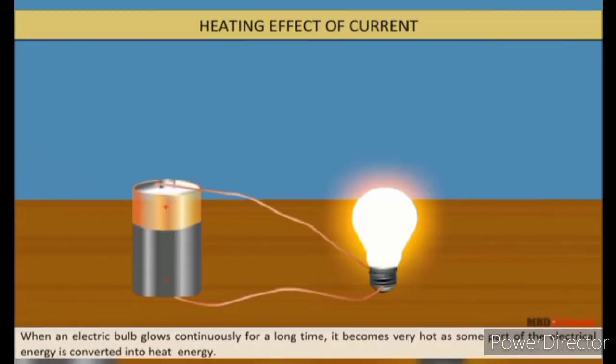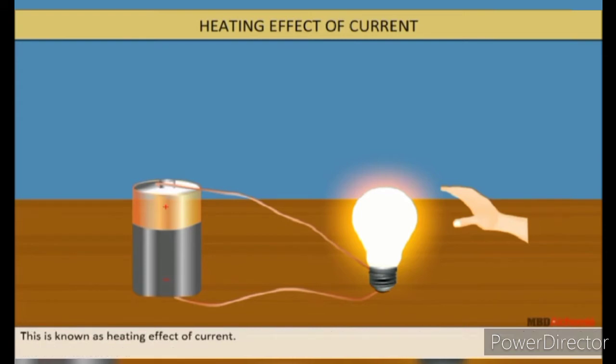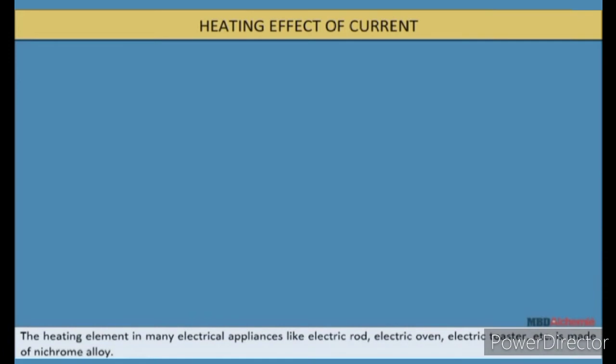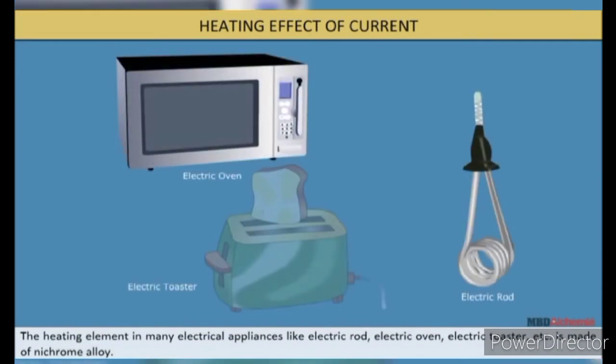Heating effect of current: When an electric bulb glows continuously for a long time, it becomes very hot, as some part of the electrical energy is converted into heat energy. This is known as heating effect of current. The heating element in many electrical appliances, like electric rod, electric oven, electric toaster, etc. is made of nichrome alloy.